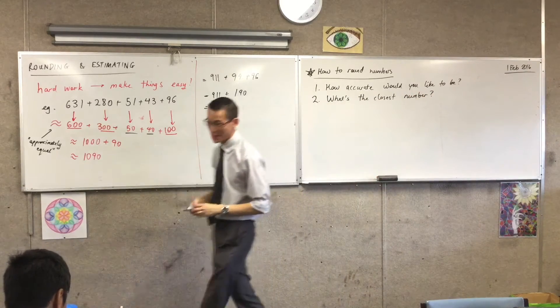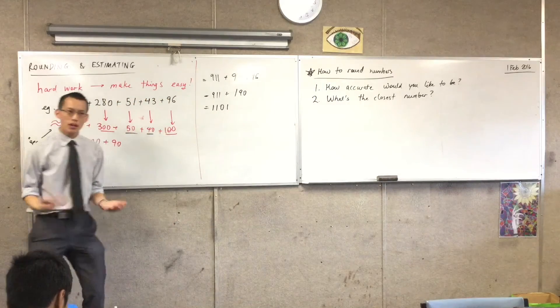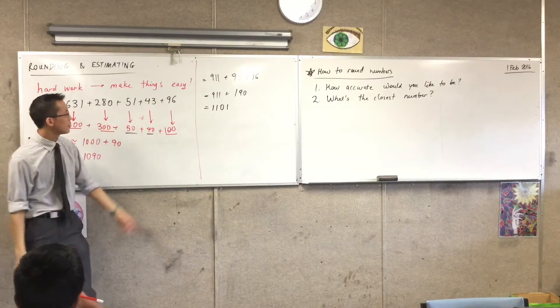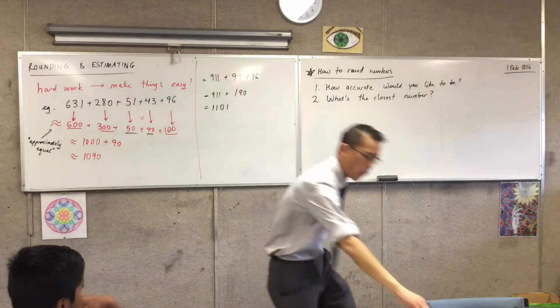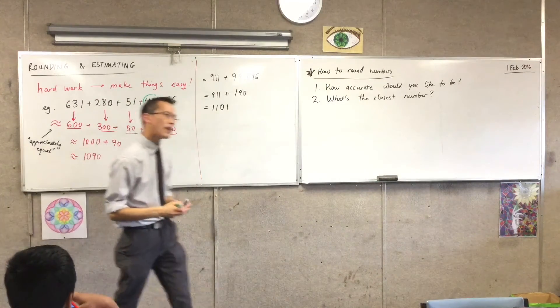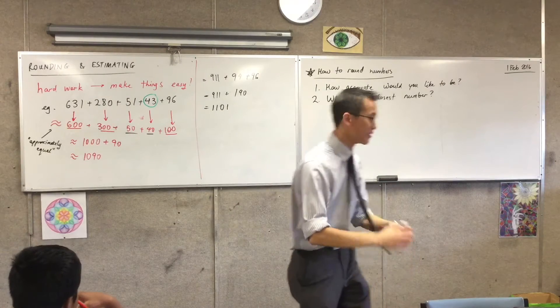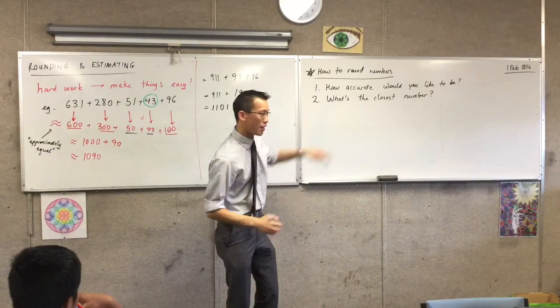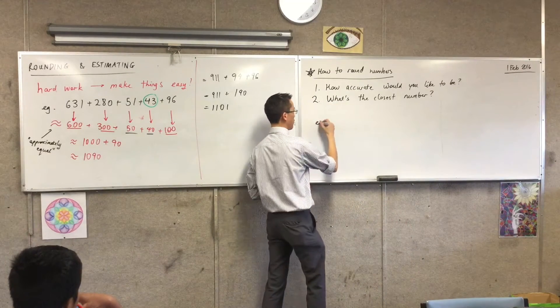Once you've decided how accurate you would like to be, you just think about which one of those is really close. So let's think about this 43 that we did, right? We already know the answer. So how do we know it went to 40? Let me show you. Underneath here, just write down that number again, 43.